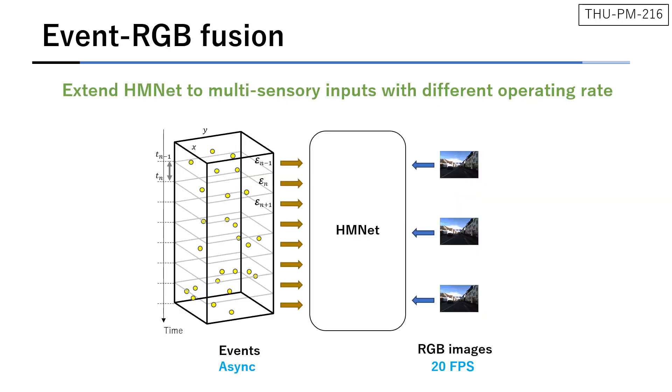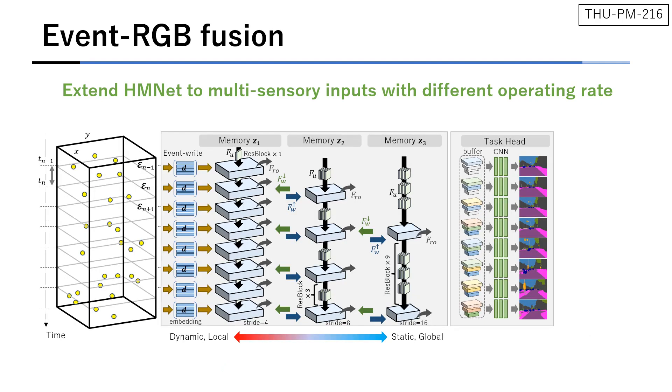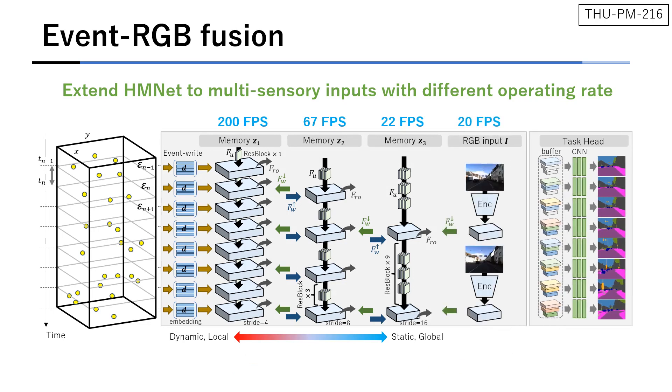We also extend HM net for sensor fusion. The difficulty is that the sensors often have different operating frequencies, such as events and image frames. The multi-rate design of HM net is a natural fit for addressing such a situation. For event RGB fusion, RGB images can be written to memory Z3 since it has a similar operating frequency. Specifically, we encode an RGB input and simply write the feature to memory Z3 using cross-attention.